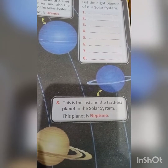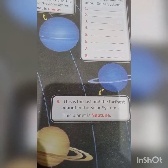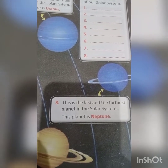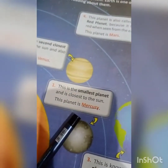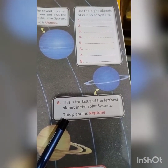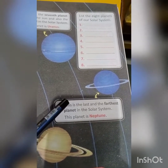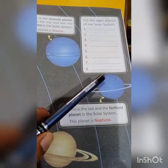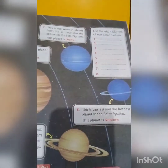Coming to the last one — this is the last and the farthest planet in the solar system. This is Neptune, the farthest planet. It has one ring and it is blue in color. As for Saturn, it has more than one ring.